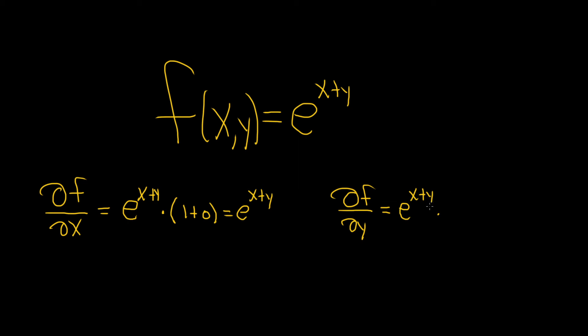So now we're taking the partial with respect to y. So in this case, the derivative of x is 0, and now the derivative of y is equal to 1. This would also be e to the x plus y. Kind of cool. We got the same answer in both cases. I hope this video has been helpful.